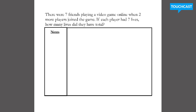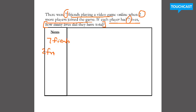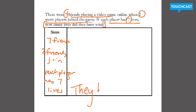All right, let's look at this next problem. There are seven friends playing a video game online, and two more friends joined the game. If each player has seven lives, how many lives did they have in total? So let's quickly take those notes: there are seven friends, and then two friends join, and then each player — that keyword — each player has seven lives. And we forgot our answer sentence: how many lives do they have in total? They have blank lives in total.